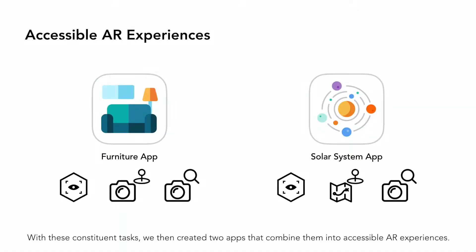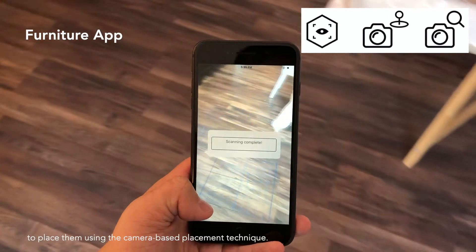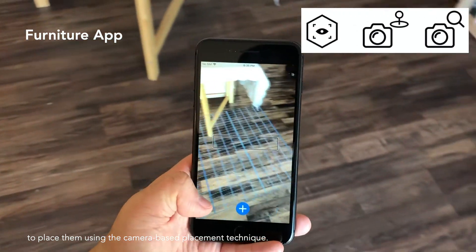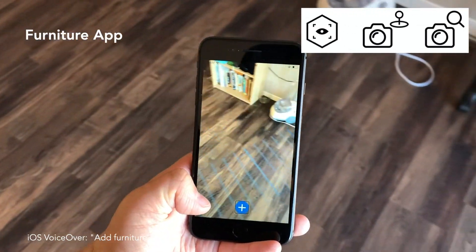With these constituent tasks, we then created two apps that combine them into accessible AR experiences. In the furniture app, users can first scan the room, then select from a list of furniture to place them using the camera-based placement technique.